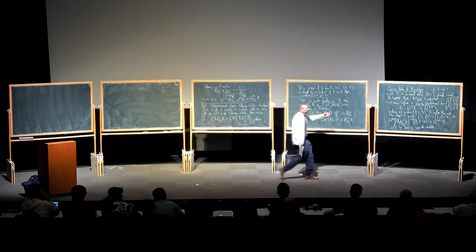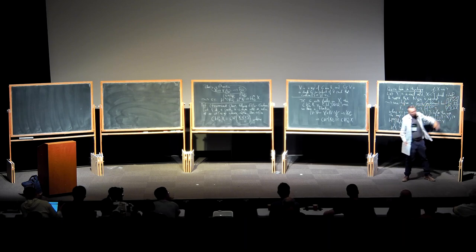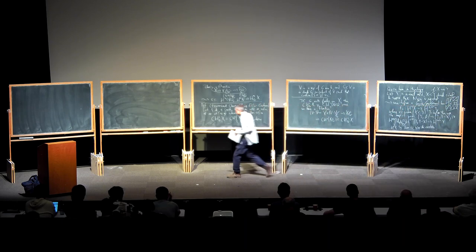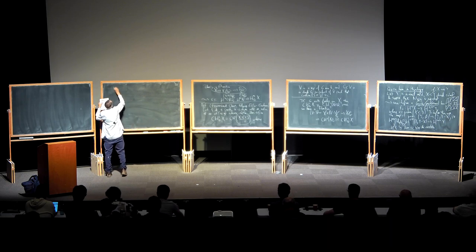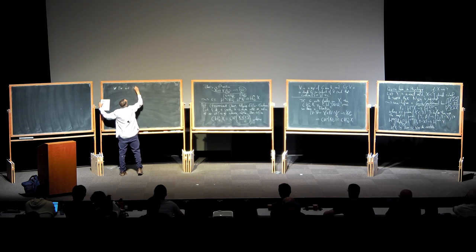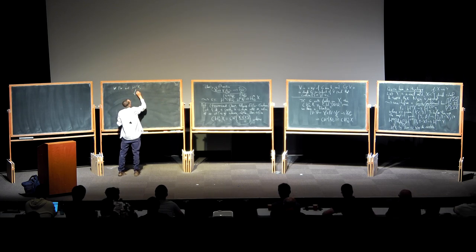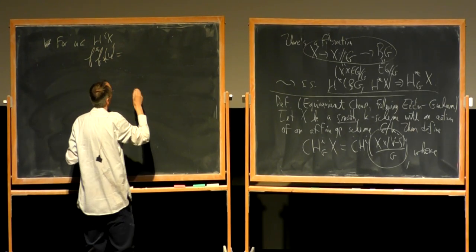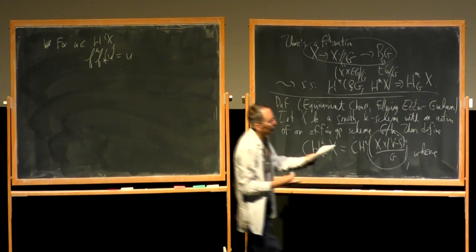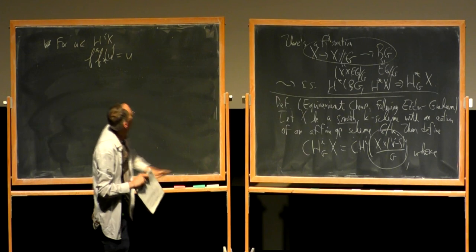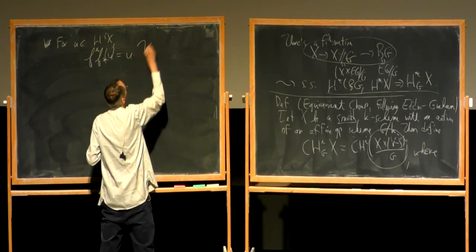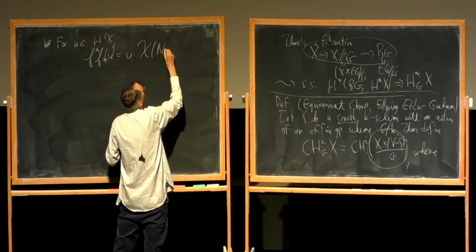A nice question is: what happens if I take a cohomology class on X, push it forward to Y, and then pull it back? For a cohomology class on X, if you push it forward to Y and then pull it back to X, you map from H^i of X to H^{i+R} of X. The answer is it's multiplication by the Euler class of the normal bundle. This is the Euler class of an oriented real vector bundle, which lives in H^R of X.